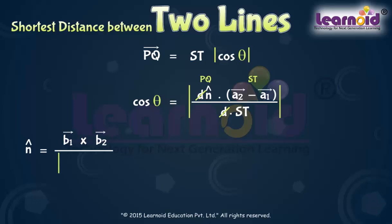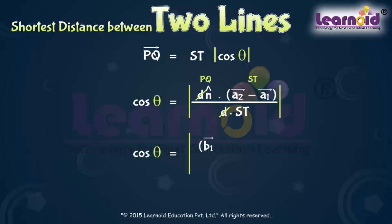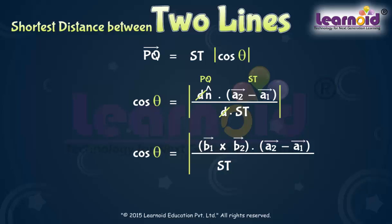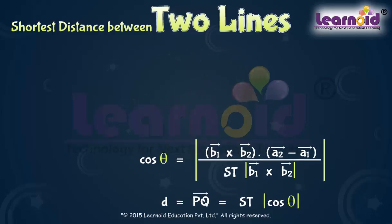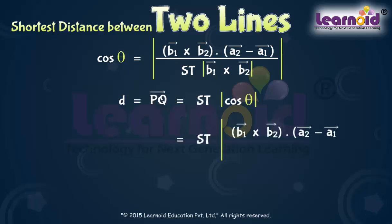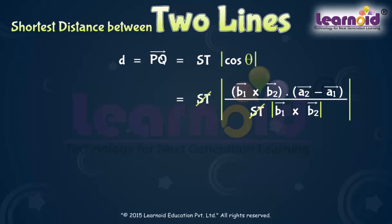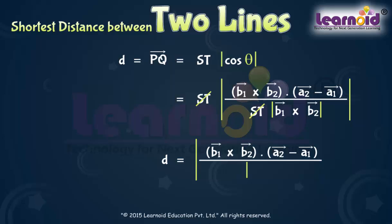This gives the modulus of B1 cross B2. So cos theta becomes B1 cross B2 dot (A2 minus A1), divided by ST times the modulus of B1 cross B2. Hence the shortest distance PQ equals ST cos theta, and D equals the modulus of (B1 cross B2) dot (A2 minus A1), divided by the modulus of B1 cross B2.